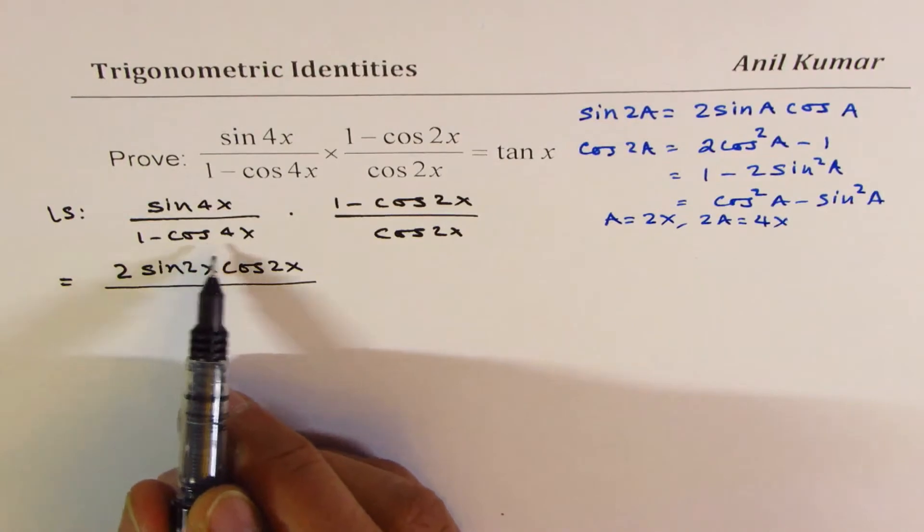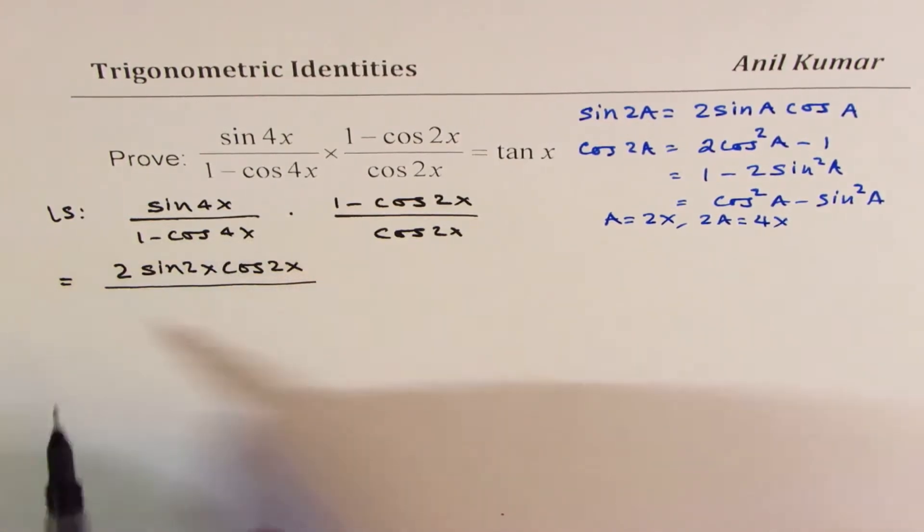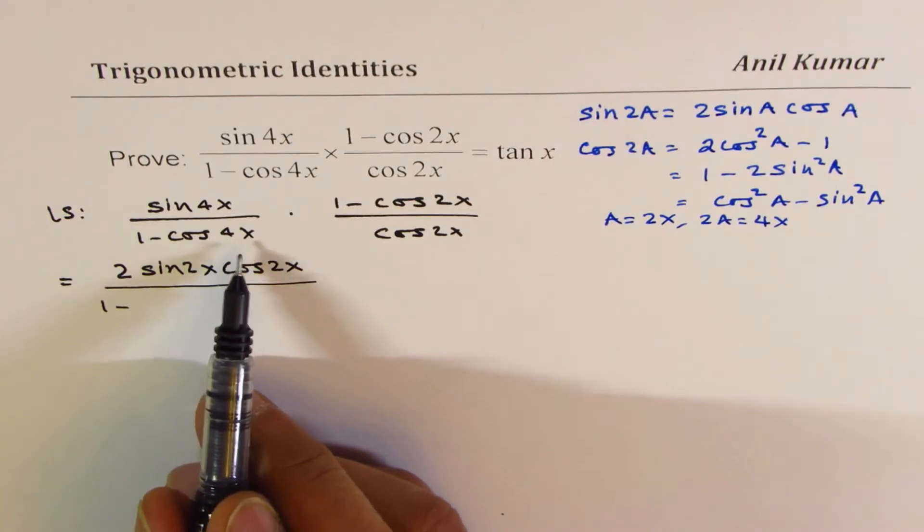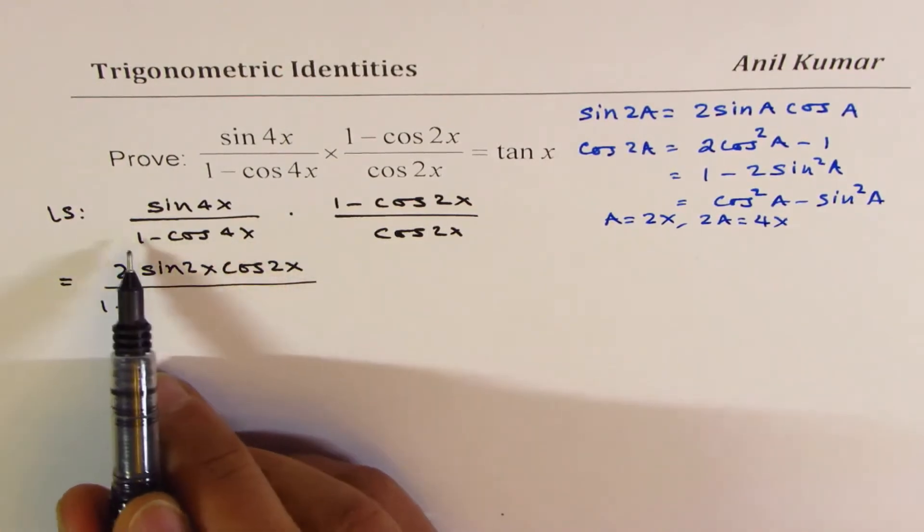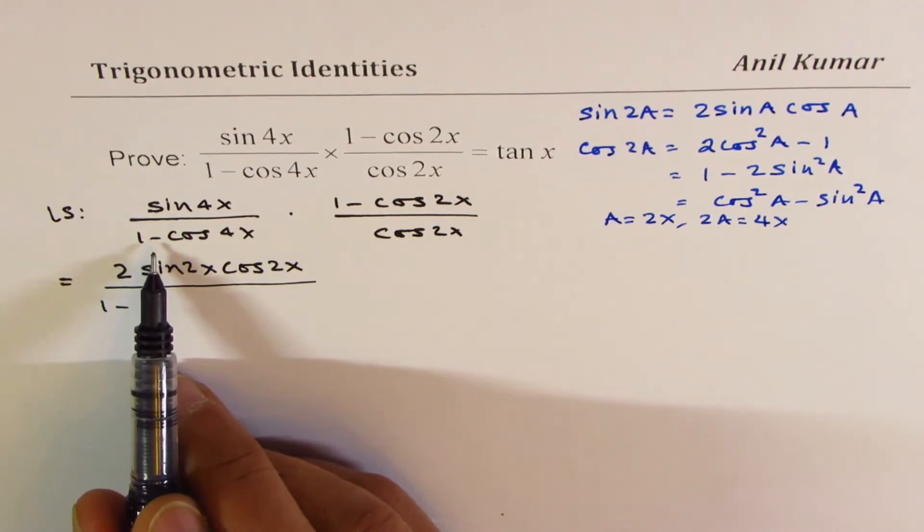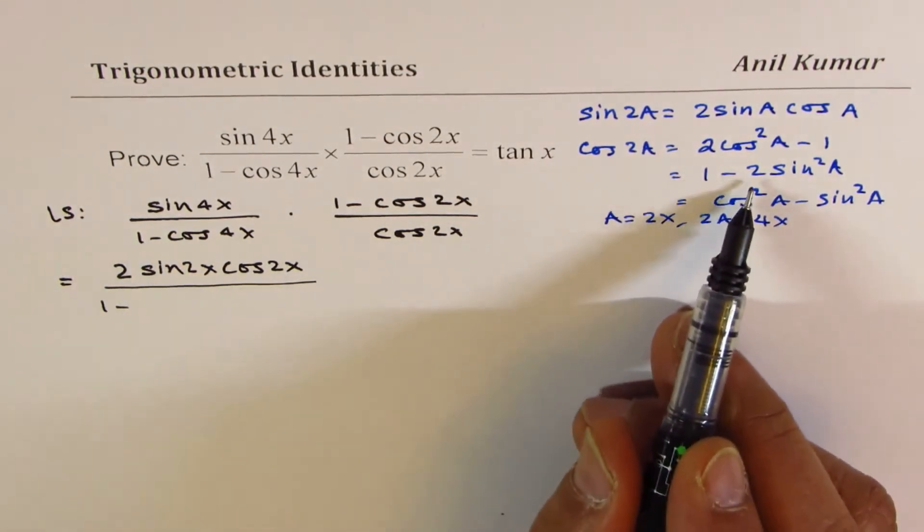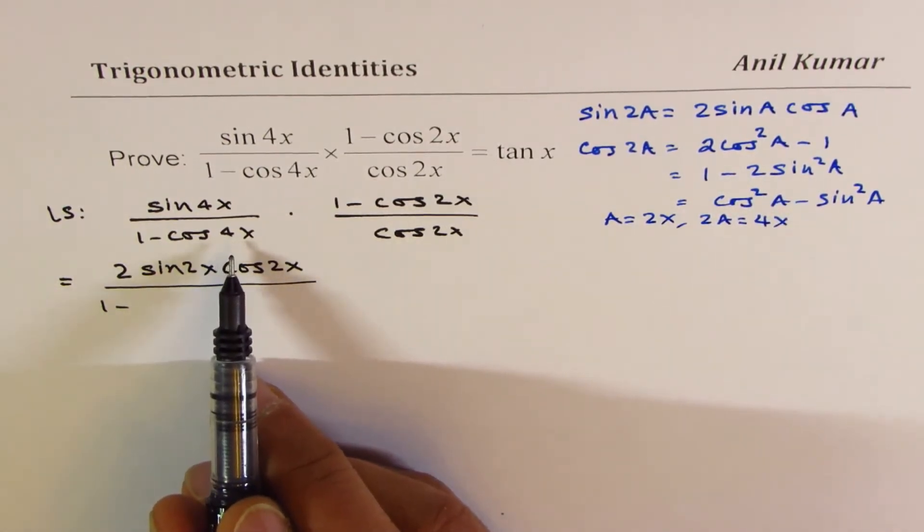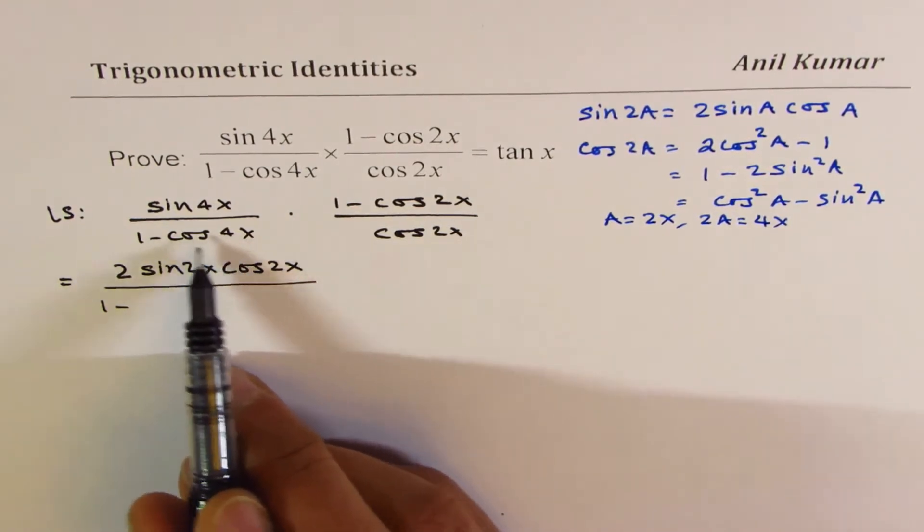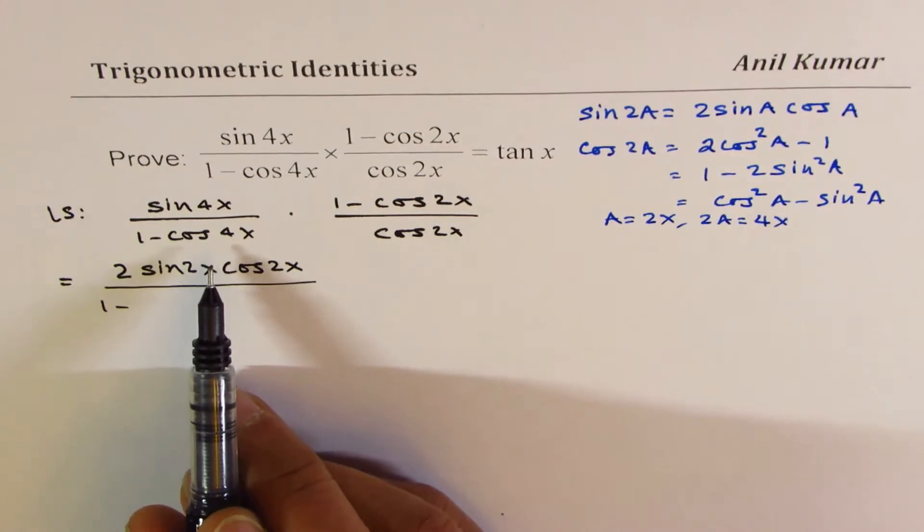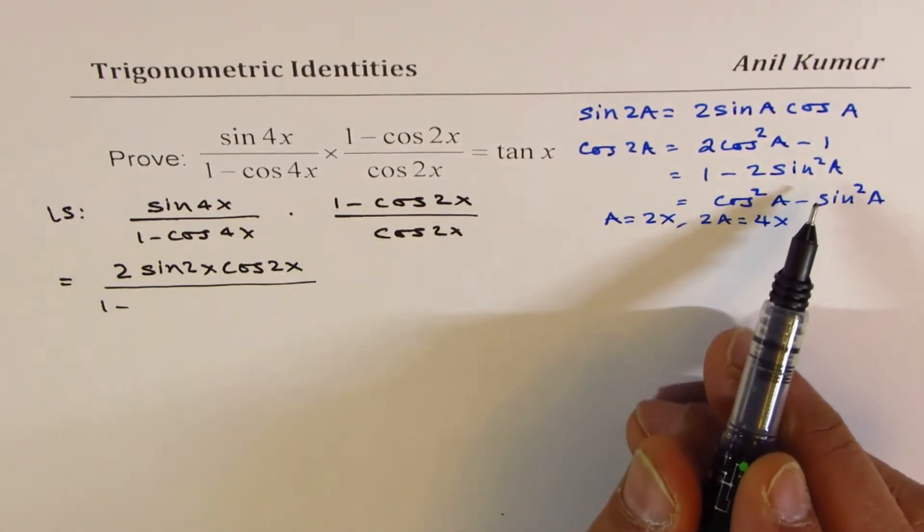Now, 1 minus cos 4x. So 1 minus, we have liberty to use cos 4x the way we want. Since there is 1 positive here and there's a negative sign, I'll rather use 1 minus 2 sine square a formula. So in that case, what will happen is that one of these terms will get cancelled. So that encourages me to use 1 minus sine square a formula.